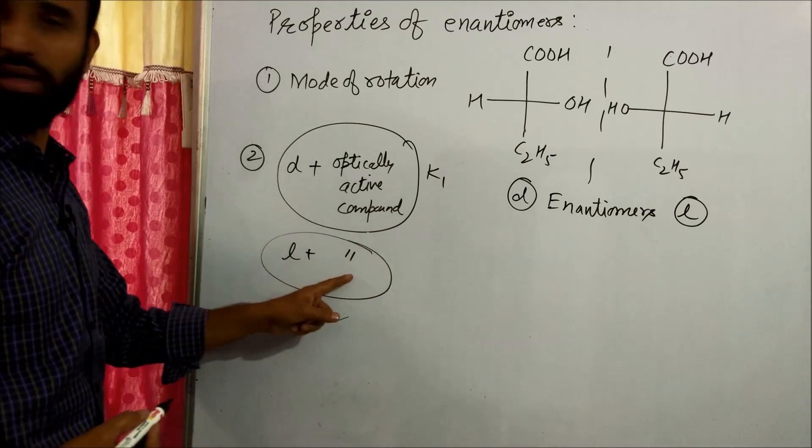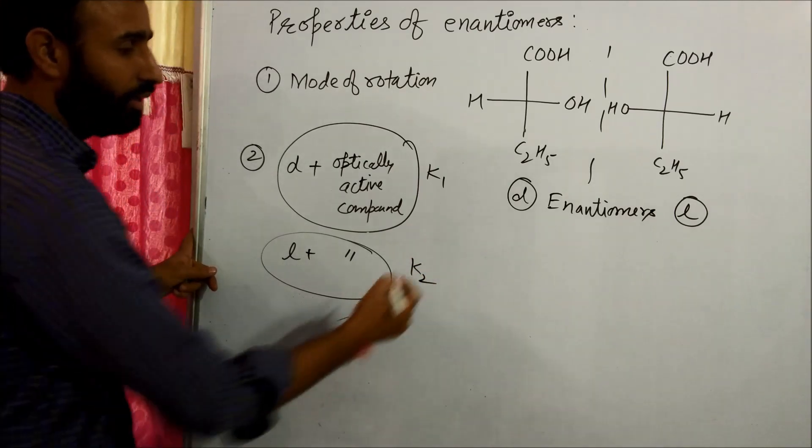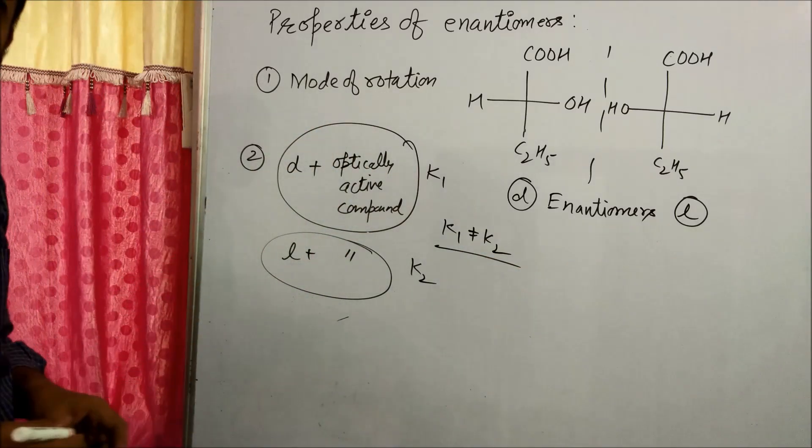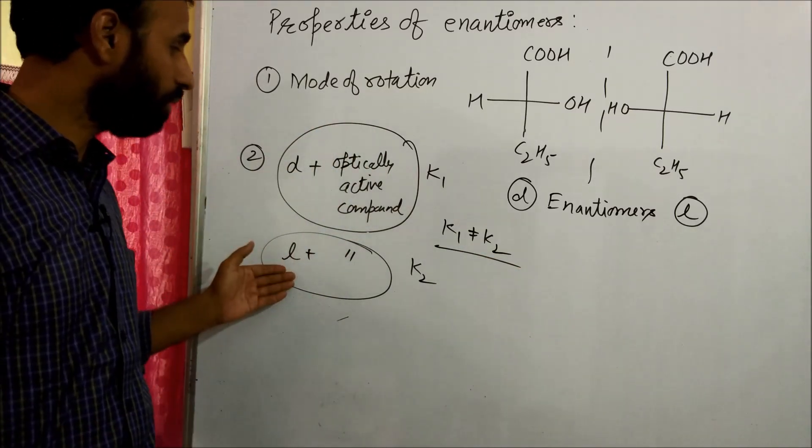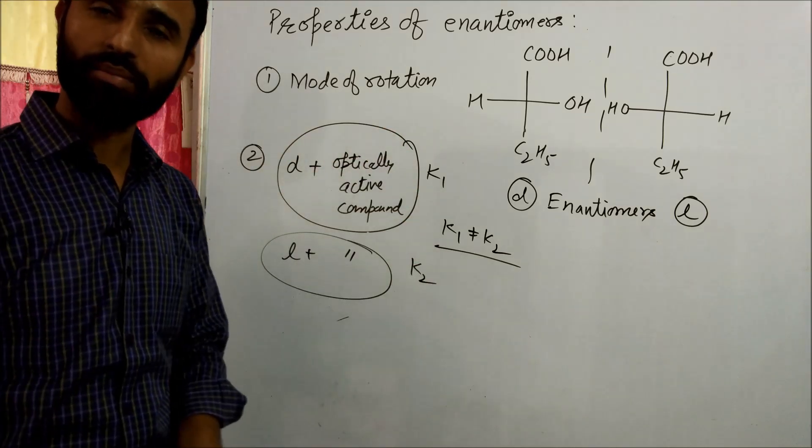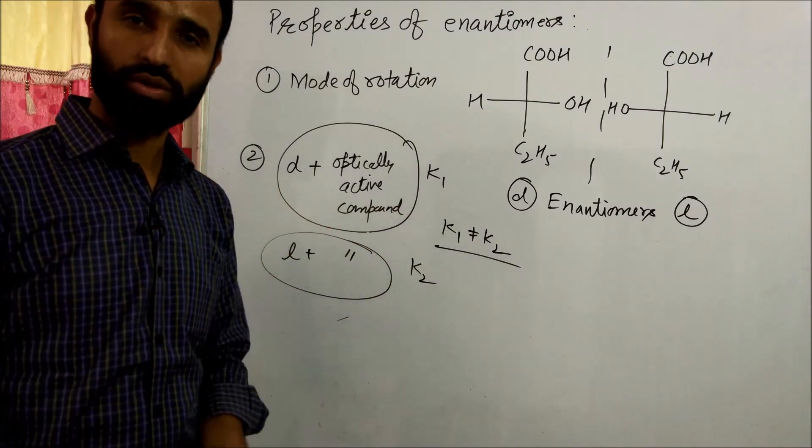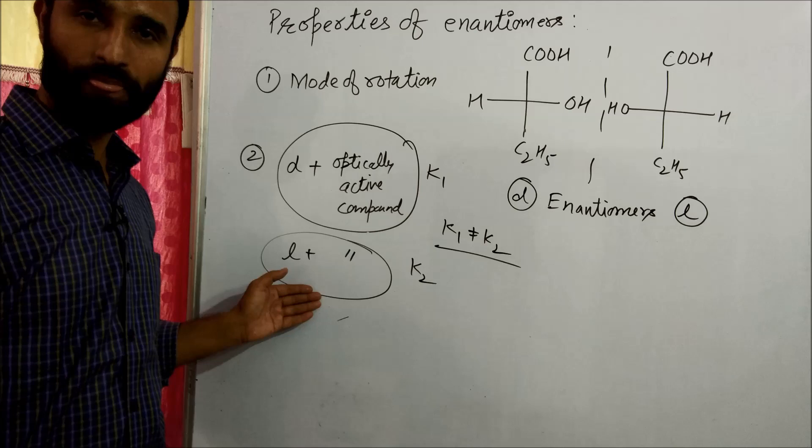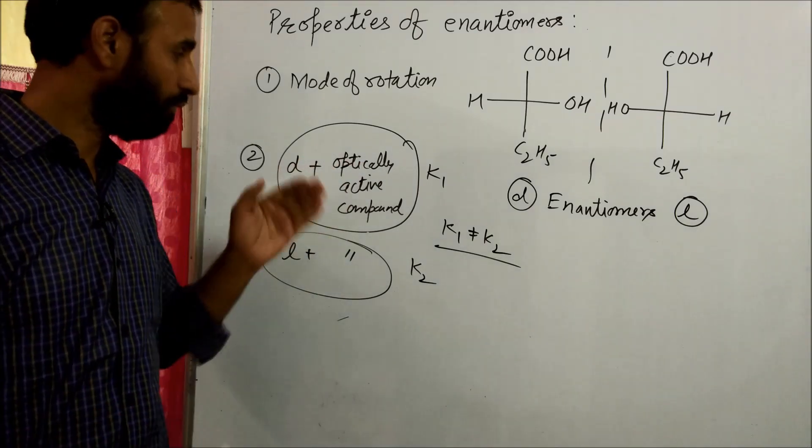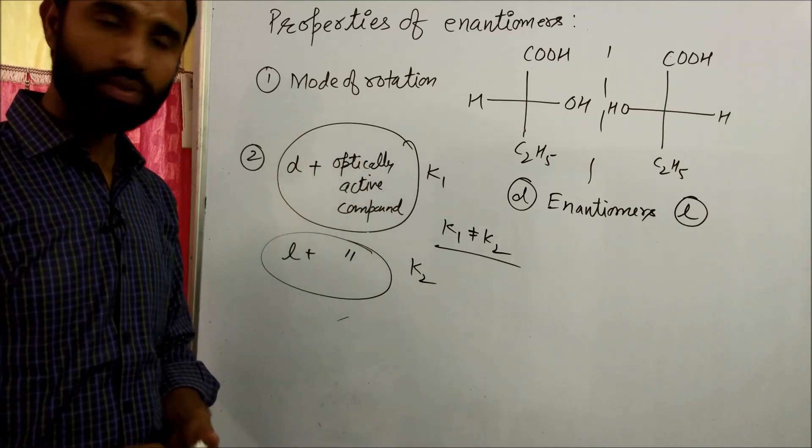Then k1 can never be equal to k2. They differ. But if D and L form react with optically inactive compound, the rate constants are same. Means there is no difference in rate of reaction of D and L form with optically inactive compound. But if D and L forms react with optically active molecule, then their rate constants are different. Their rate of reactions are different.